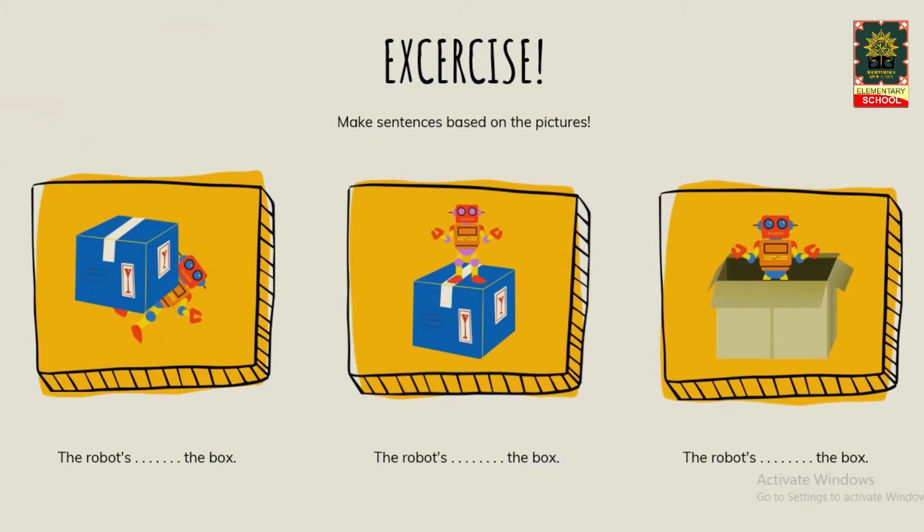The first picture, gambar pertama. Sudah diperhatikan? Yuk kita jawab bersama-sama. Pertanyaannya: the robot [is] ... the box. Jawabannya yang tepat adalah? That's right — under.